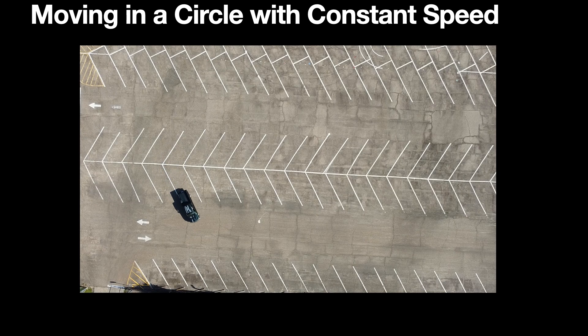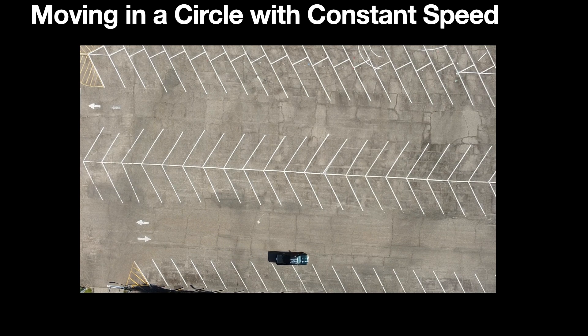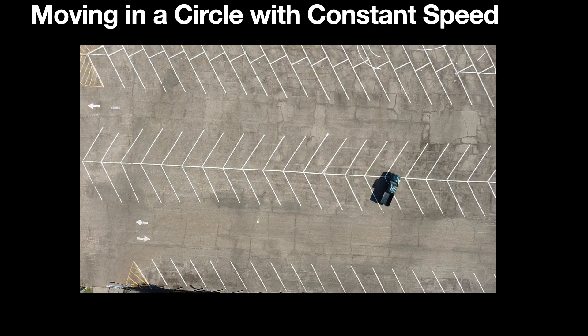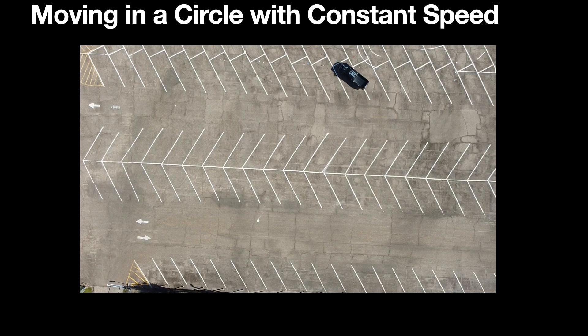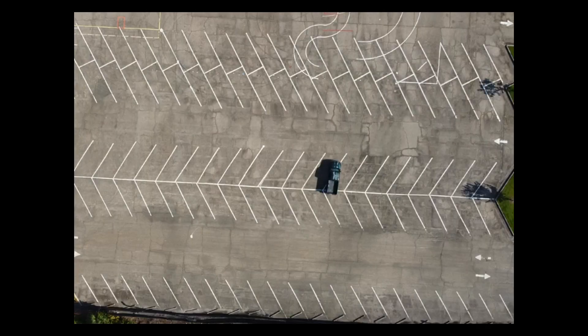Let's get started with a car moving in a circle — that's me in the truck, driving in a circle. I want to find an expression for the acceleration of an object moving in a circle with constant speed. If we look at the car at some particular point, it has velocity V1, and a short time later it has velocity V2. The magnitudes are the same but the directions differ, so since V1 does not equal V2 as a vector, the object did indeed accelerate.